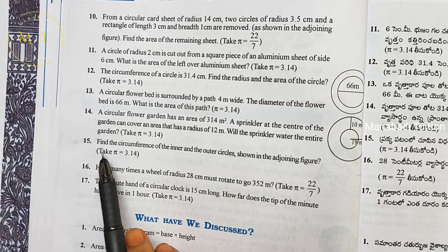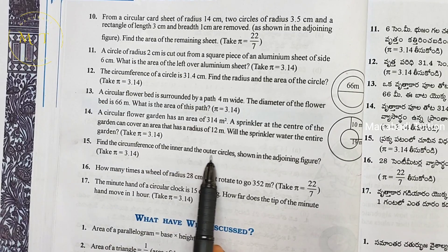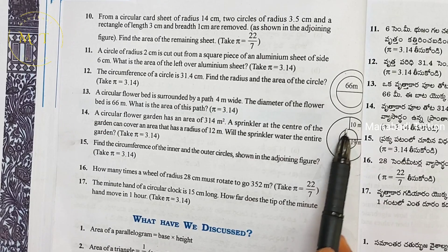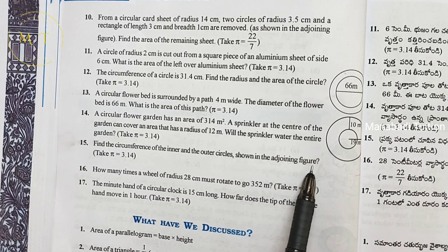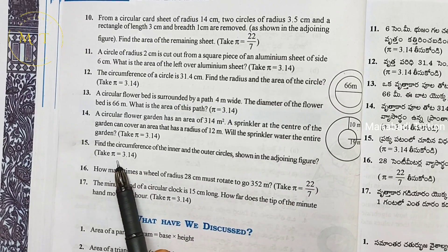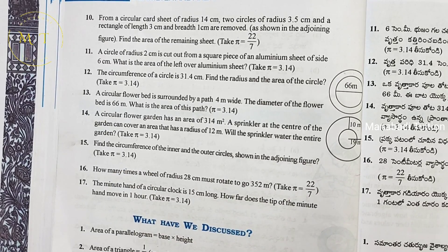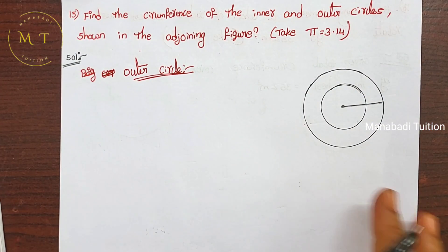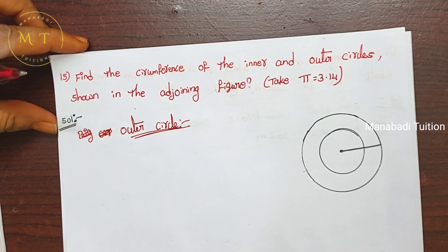Question number 15: find the circumference of the inner and outer circles. So we have inner and outer circles. The pi value is 3.14. First we will find the circumference of the outer circle.